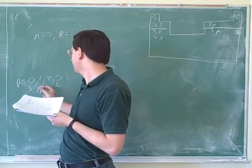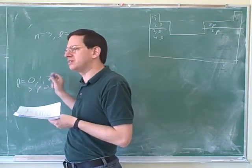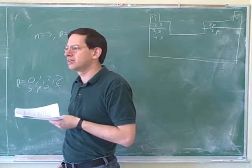And l equals 1 is just a pompous way of saying the p subshell. And l equals 2 is just a fancy way of saying d. So there's just two different ways to describe subshells. Either s, p, d, or f, or l equals 0, l equals 1, l equals 2, or l equals 3.